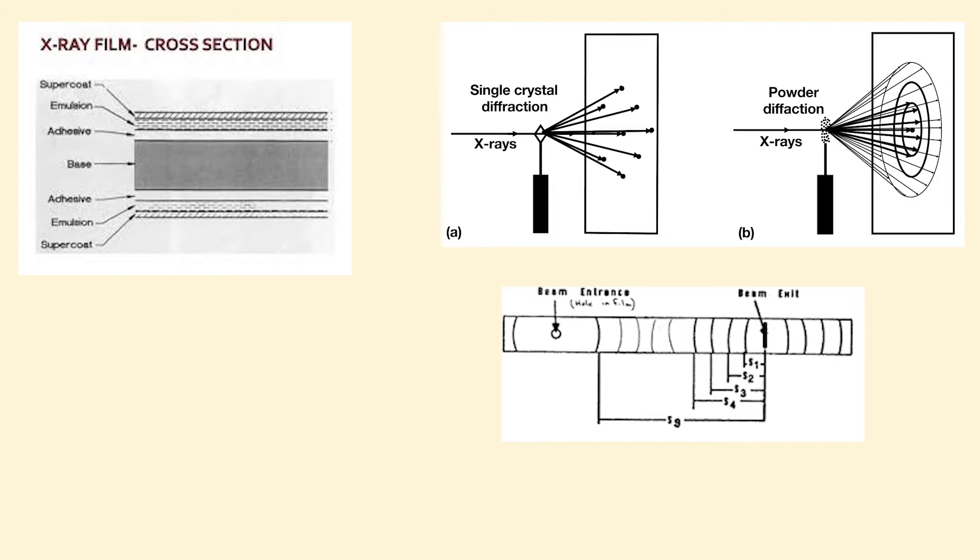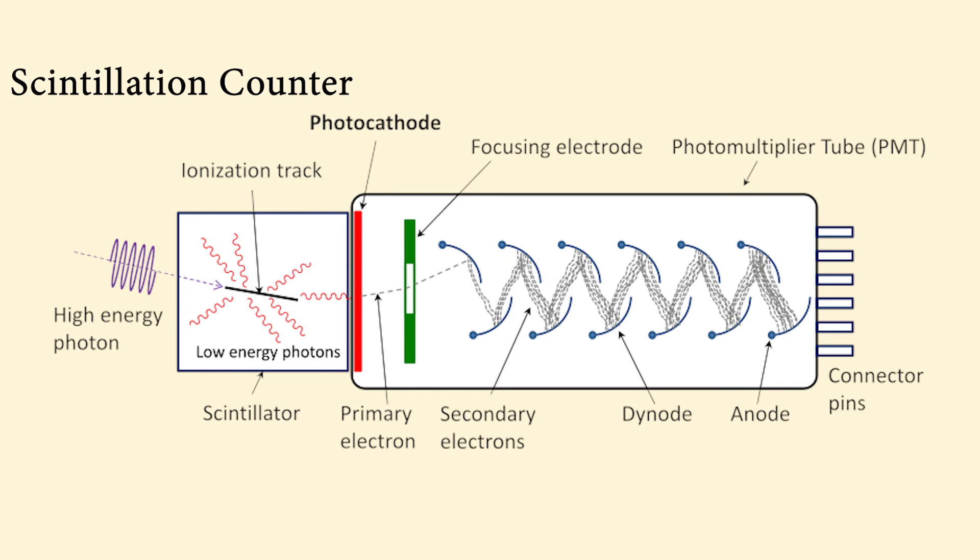A scintillation counter is a common radiation detector that works by using the excitation effect of incident radiation on a material in the scintillator, which produces a pulse of photons, which are then detected by a photodetector. The pulse of photons is converted into an electrical signal, which can be processed by a computer.